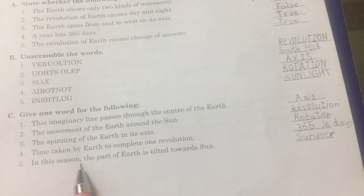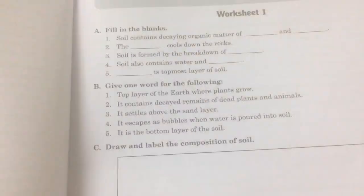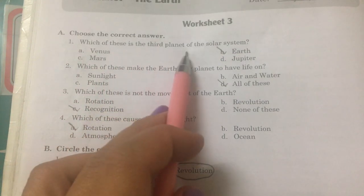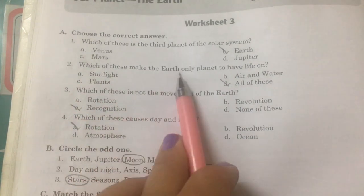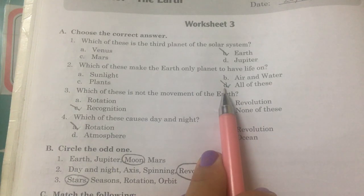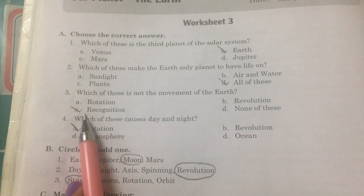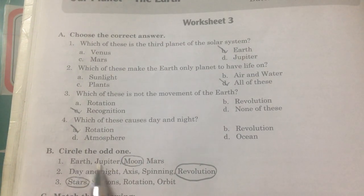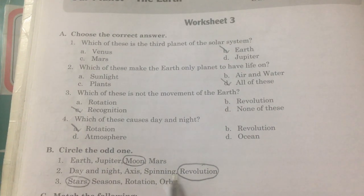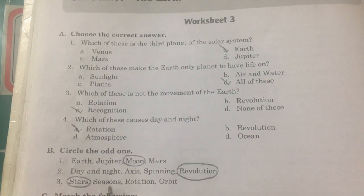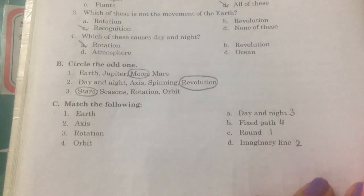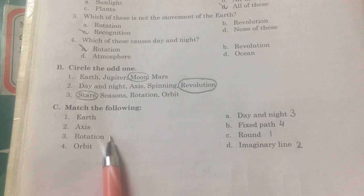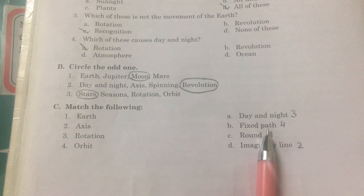In the season where the part of the earth is tilted toward the sun, it is summer. Workbook 3 — Choose the correct answer: (1) Which is the third planet of the solar system? Earth. (2) Which of these makes the earth the only planet to have life? All of these. (3) Which of these is not a movement of the earth? Recognition. (4) Which of these causes day and night? Rotation. Circle the odd one out: moon; revolution; stars. Match the following: Earth is round; axis — imaginary line; rotation — day and night; orbit — a fixed path.